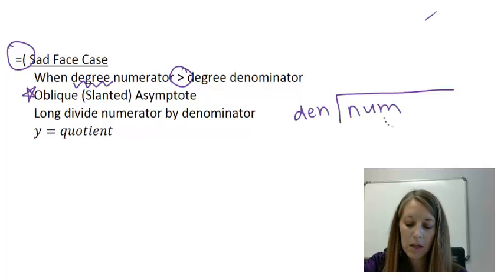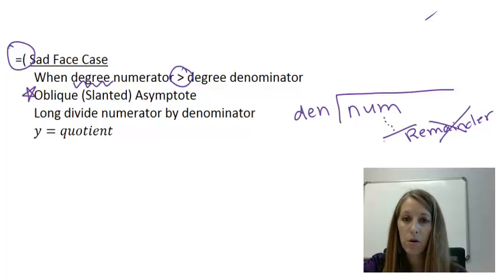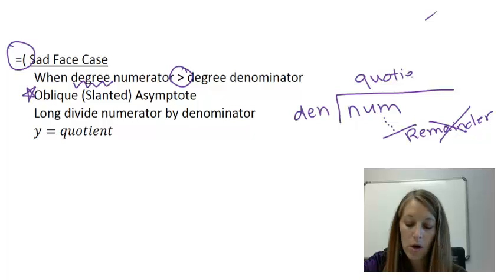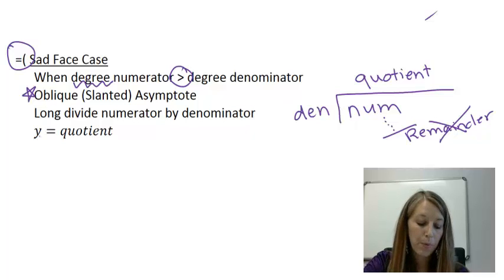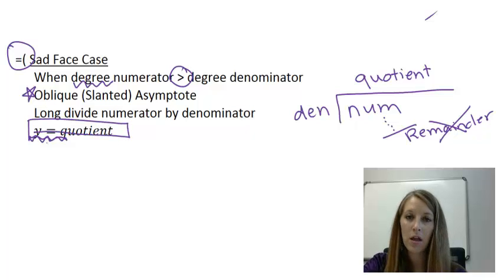Now, most likely when we do this work, it's not going to come out even. It's going to give us a remainder down here, but that doesn't matter. We throw it away. Whatever we get up here, which is the answer or the quotient, that is going to be our oblique or a slanted asymptote. So we put it in the format of y equals that quotient, and that's what we're going to draw as that dotted line. That's going to give us our asymptote, which our graph is going to follow.